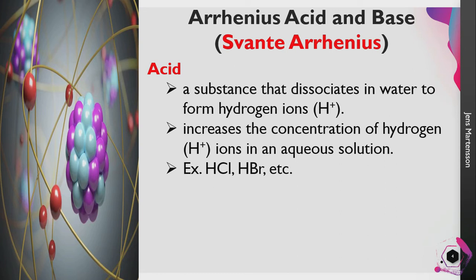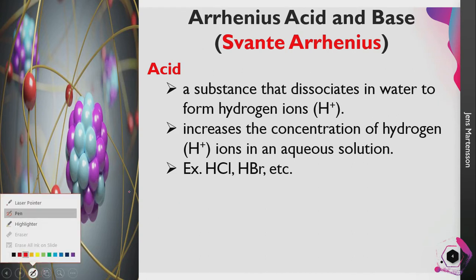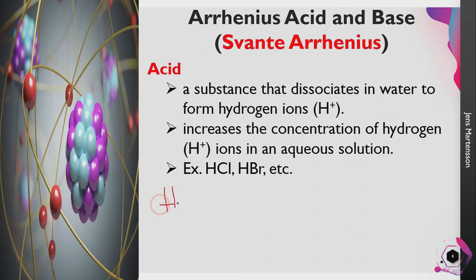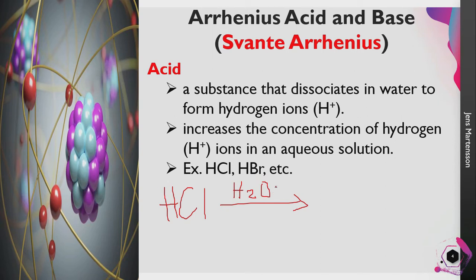Examples of acids are hydrochloric acid and hydrobromic acid. If we put hydrochloric acid in water, an arrow in chemistry indicates a chemical reaction. Water is our catalyst in this reaction. If we put hydrochloric acid in water, it will yield a hydrogen ion and a chlorine ion, which is a negatively charged ion.